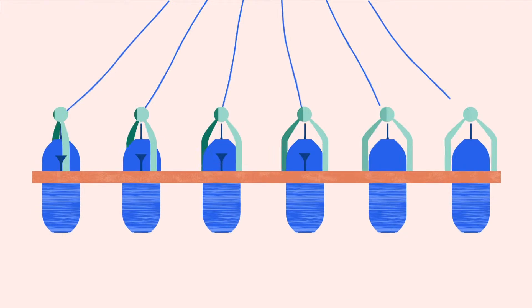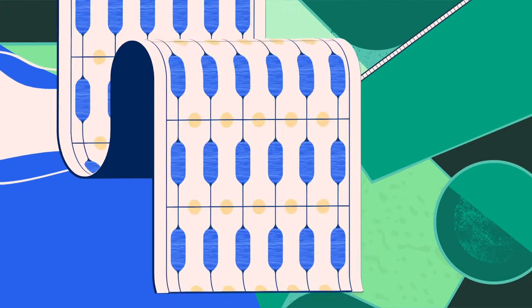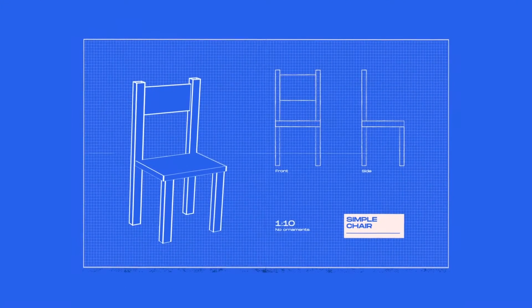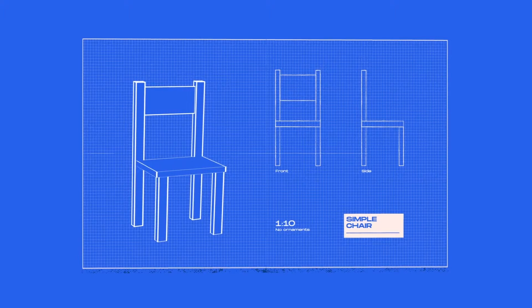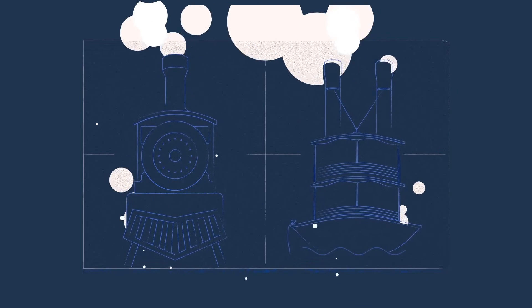The invention of the spinning jenny and water frame ignited the mechanization of the textile industry. The steam engine quickly followed, making it possible to work, farm, and live without proximity to waterways. Textiles, clothing, and furniture could be cheaply mass-produced, freeing up labor and resources which could be used to develop new transportation methods like steamboats and railroads.